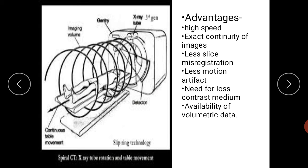What are the advantages? The advantages are high speed and exact continuity of the images. We can continuously acquire images with less slice misregistration, less motion artifact because it shortens the time. It will reduce motion artifact and also give you volume imaging.